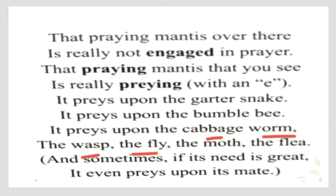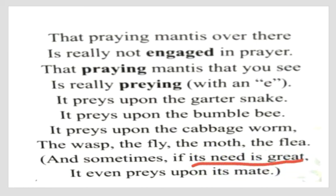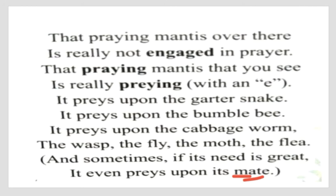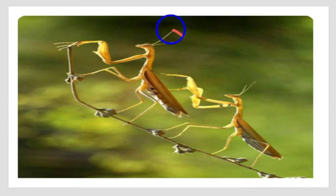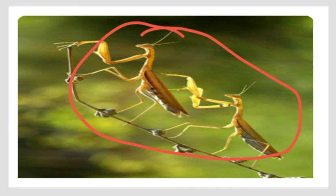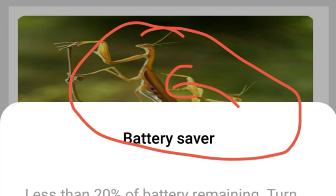It also preys upon the moth — those insects you see flying near lights at night. It preys on the flea as well, killing and eating everything. And sometimes, if its need is great, it even preys upon its mate. 'Mate' means companion or partner. So the praying mantis even hunts and eats its own mate when very hungry, as you can see in the picture.